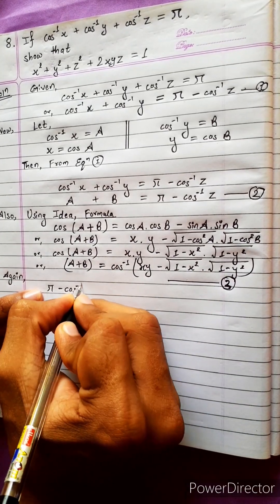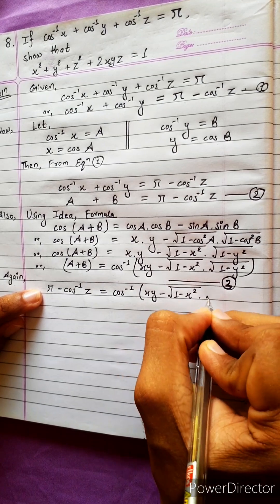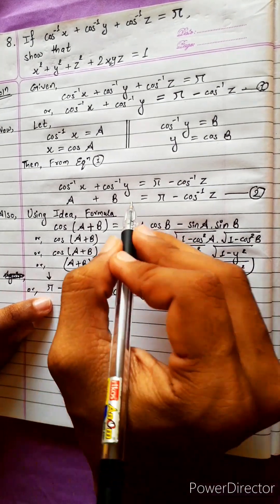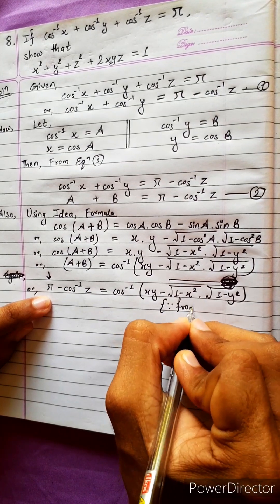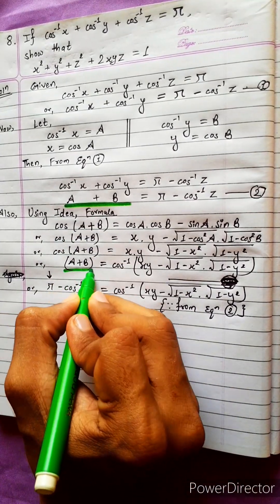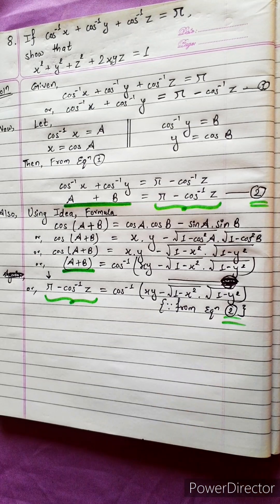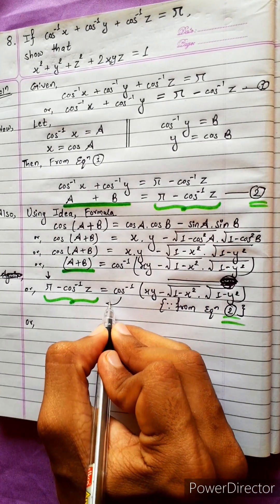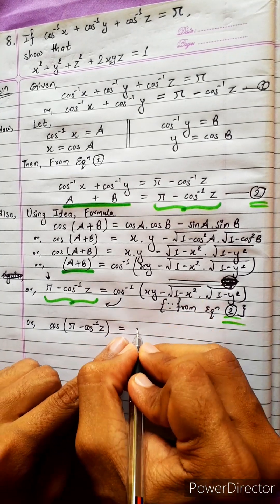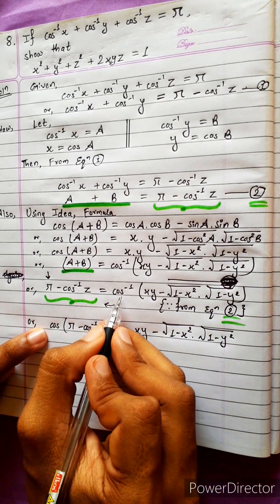Now applying equation 2: since A + B = π − cos⁻¹z, we substitute into the formula. cos(A + B) = x·y − √(1 − x²)·√(1 − y²). On the left side, cos(π − cos⁻¹z) remains.